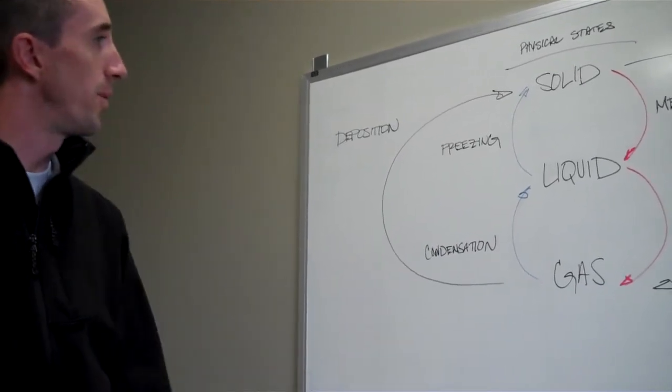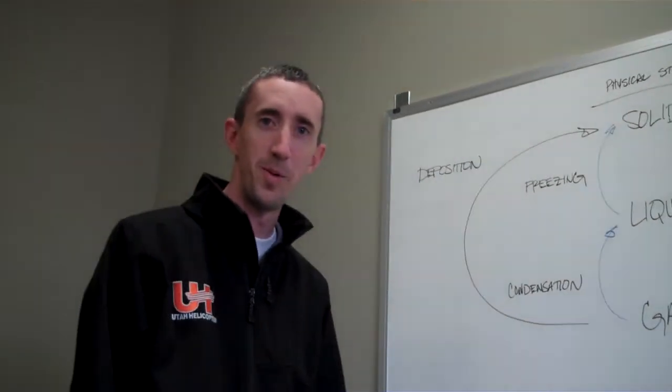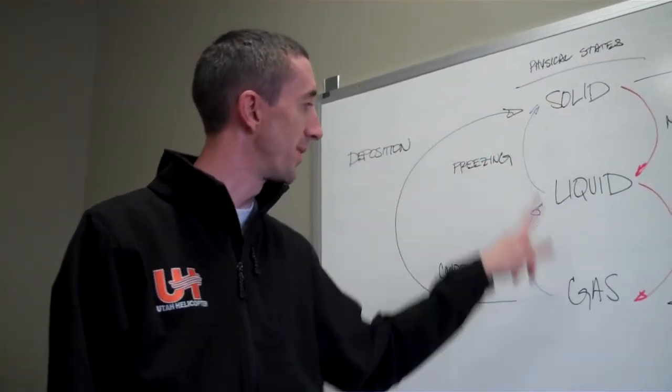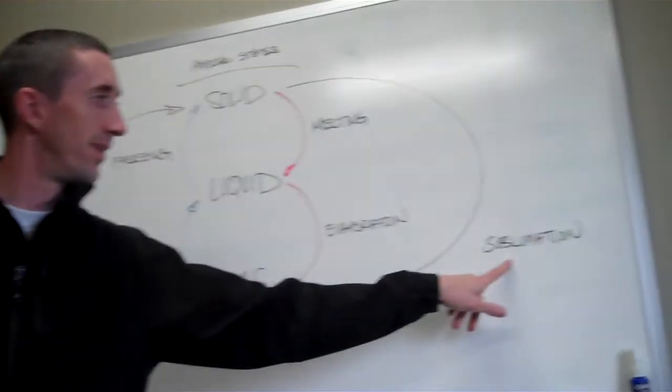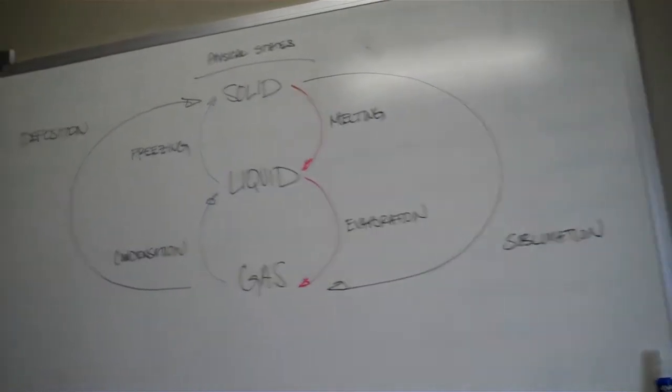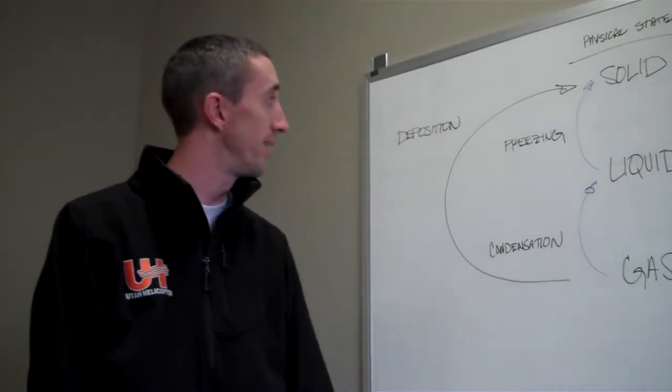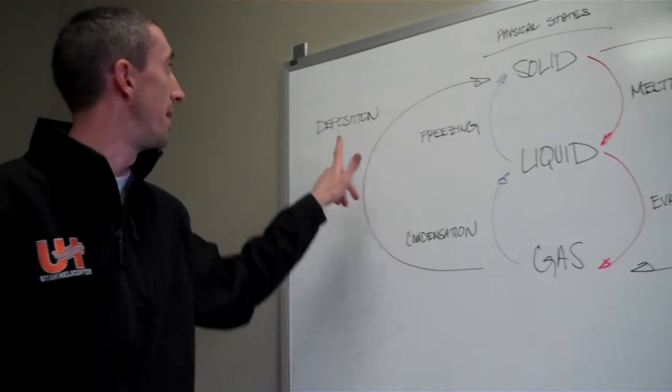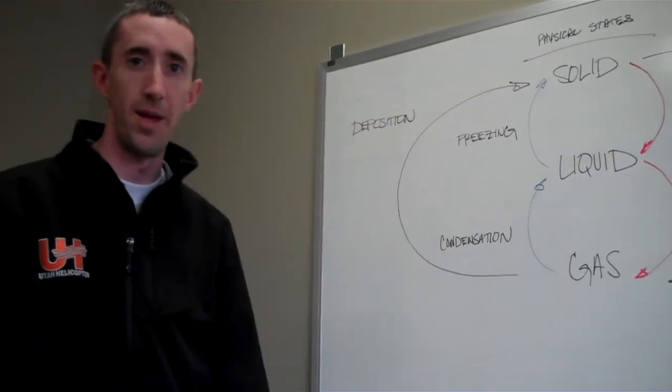The other two are a little bit more difficult to remember and a little bit more difficult to understand. If you want to move from a solid straight to a gas, it's called sublimation. Dry ice is a really good form of those. And, if you want to move from gas to a solid, deposition is the other one. That would be frost on your windows in the morning when you go out to scrape them.